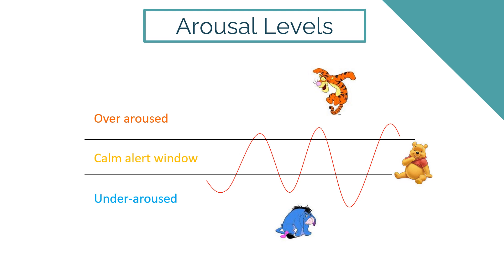Before we begin thinking about specific strategies, it's important to consider arousal levels. Children with ASD sometimes find it difficult to get themselves into a calm, alert state in order to participate in an activity and to focus. Think of the different activities you might do to wake yourself up — you might stretch, have a cup of coffee, go for a walk or listen to stimulating music. To calm yourself down, you might have a bath, listen to relaxing music or have a milky drink. We all have strategies to help us concentrate, such as taking notes, biting a pen lid, chewing gum, doodling or foot tapping. It's different for each person, and something one person finds calming can be stimulating to someone else, so it's important to remember this and link up with your child's school teachers to share ideas.